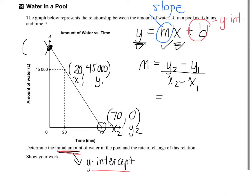Okay. So, y2 is 0 minus y1 is 45,000. Over. What's my x2? 70 minus... 20. 20. Zero takeaway 45,000 is negative 45,000. And what's 70 takeaway 20? 50.